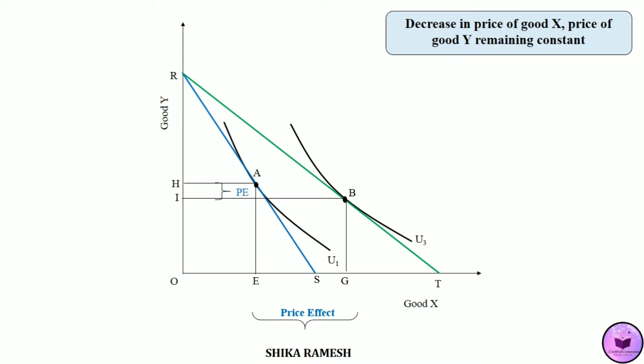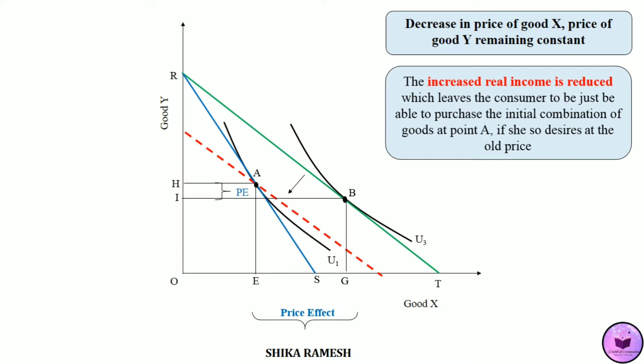Out of this EG amount of good X, how much has been consumed due to substitution effect and how much due to income effect? To identify that, we use Slutsky's cost difference method, wherein the increased real income of the consumer is reduced so as to be able to purchase the initial combination of goods at point A at the initial price. To reduce this increased real income, we draw a budget line parallel to RT downwards, and that budget line passes through the initial combination of goods — that is, it passes through point A.